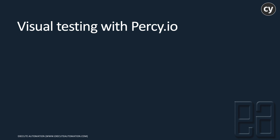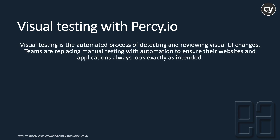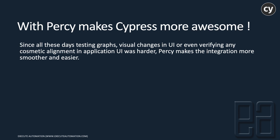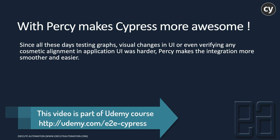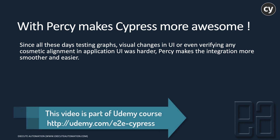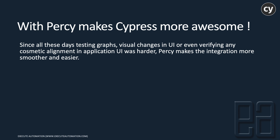Visual testing with Percy. Visual testing is an automated process of detecting and reviewing visual UI changes. Teams are replacing manual testing with automation to ensure websites and applications always look exactly as intended. Percy makes Cypress more awesome because testing visual changes in UI or verifying any cosmetic alignments in application UI was previously harder.